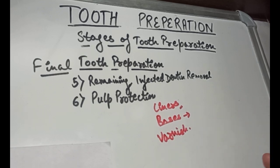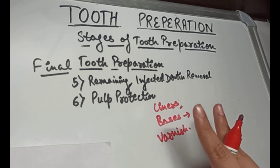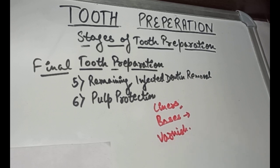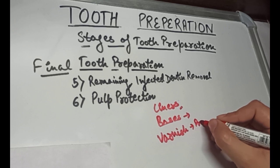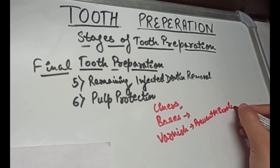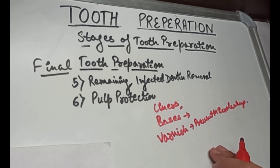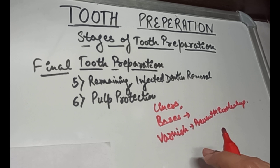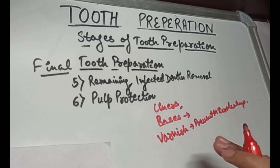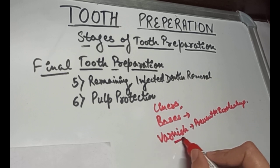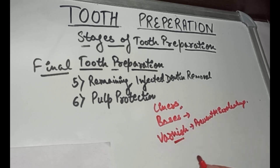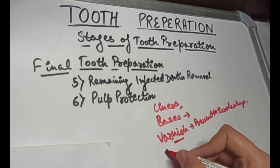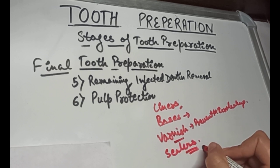Varnish is a solution liner used earlier to seal the dentinal tubules; two coats of varnish are applied on the prepared tooth surface for amalgam restorations. Varnish helps prevent micro-leakage of bacteria, reduces post-operative sensitivity by reducing infiltration of fluids or salivary components at the margins of newly placed restorations, and acts as a barrier to reduce pulpal irritation. However, the film thickness of varnish is thin and insufficient to provide thermal insulation. Tooth varnishes are not used under composite because the solvent in the varnish could react with or soften the resin component and adversely affect its polymerization.